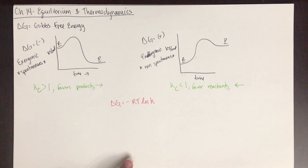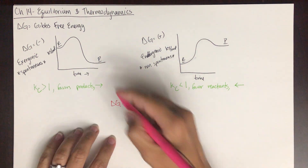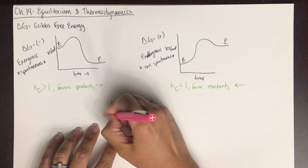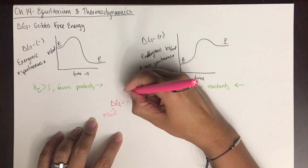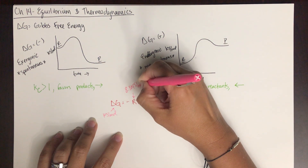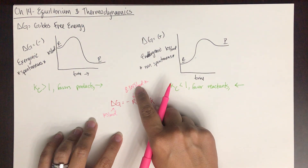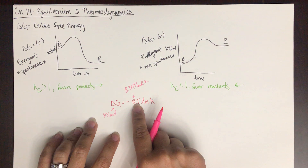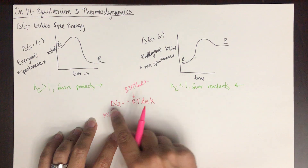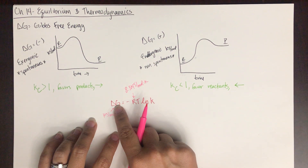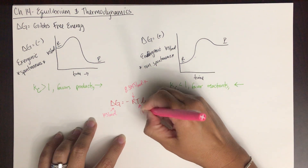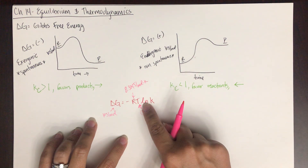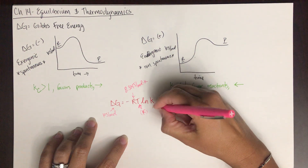Since we're talking about delta G as free energy in units of kilojoules per mole, the R here is 8.314 joules per mole Kelvin — not the 0.0821 liter atmospheres per mole Kelvin from the ideal gas law. We use different values for R depending on context; here we need a unit of joules. T is the temperature in Kelvin, and ln K is the natural log of the equilibrium constant.